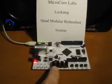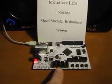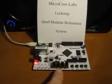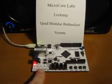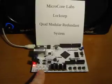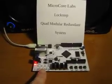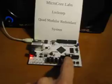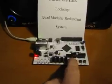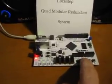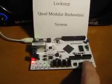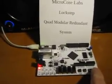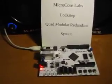Each button corresponds to one of the four modules so we can inject errors into them independently. The switches select which type of error will be injected into the modules. An LED will light to indicate that a module has dropped out of the lockstep and is attempting to rebuild itself. When the button is released, the module will be able to complete the rebuilding process, and the LED will turn off to indicate that it has rejoined the lockstep as a healthy module.